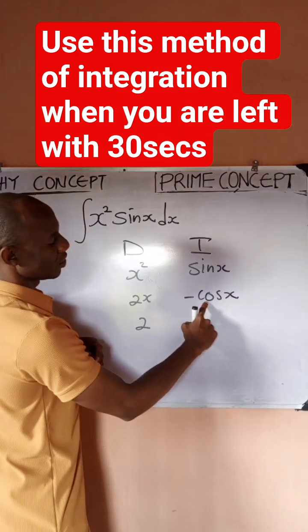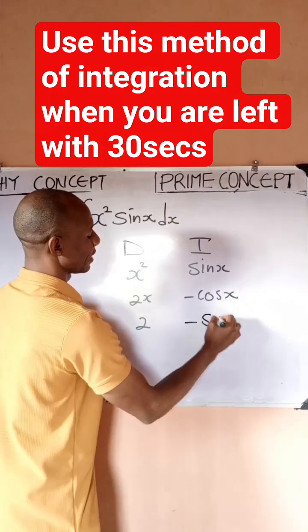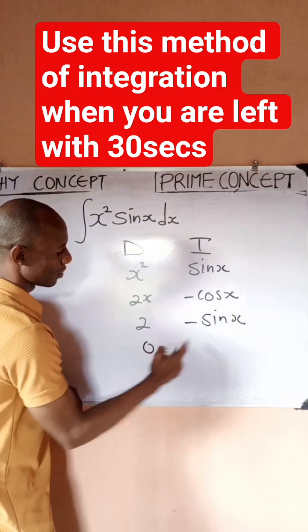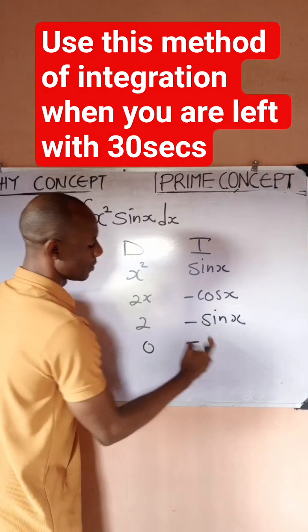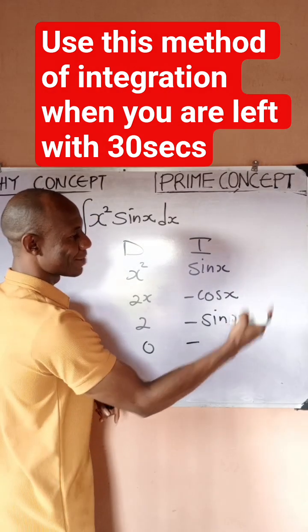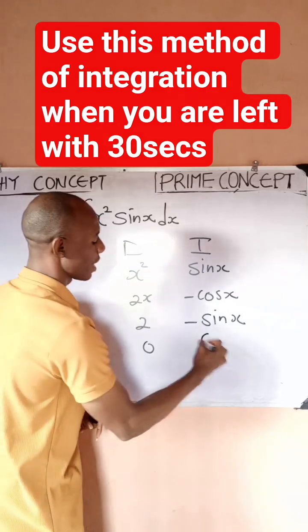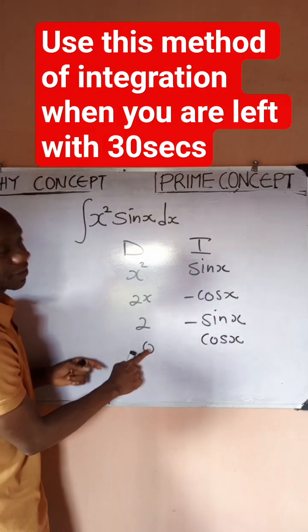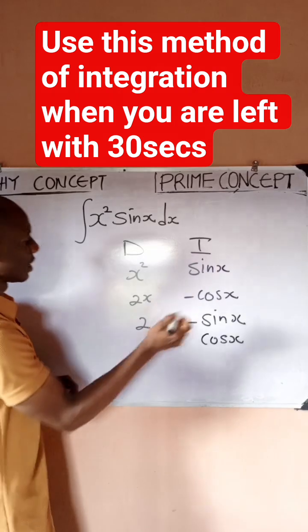You differentiate 2x, you have 2. You integrate, now ignore this minus, bring the minus down. When you integrate cos, you get sine x. Then when you differentiate 2, you have 0. Bring your minus down again. When you integrate sine, you get minus cos, which makes this plus, so I'll have cos x. Since I've arrived at 0, I will stop the process.